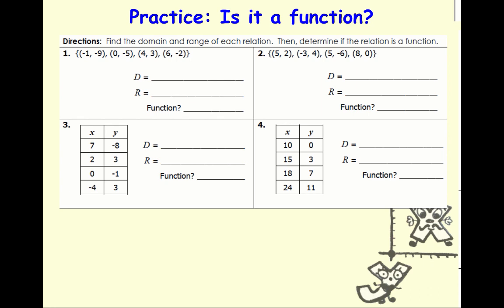When you're looking at a set of ordered pairs, the x's are always going to be the domain. So we would go ahead and use brackets to show it's a set, then list negative 1, 0, 4, and 6. The y's are always going to be your range. So again, we use brackets and then we list our y's. Is it a function? Well, we look and see if there's a one-on-one correspondence between our domain and our range. For each number in our domain, each one only maps to one number. Negative 1 to 9, 0 to negative 5, 4 to 3, 6 to negative 2. So yes, it's a function.